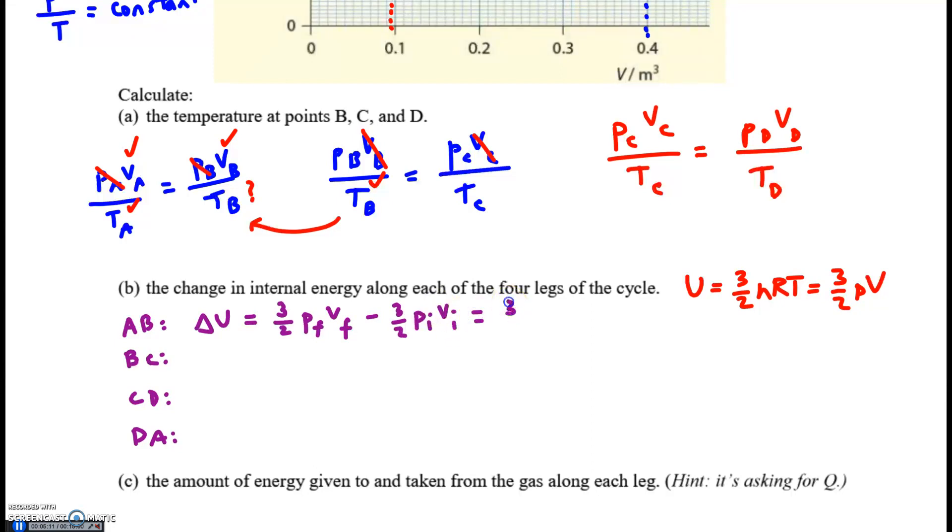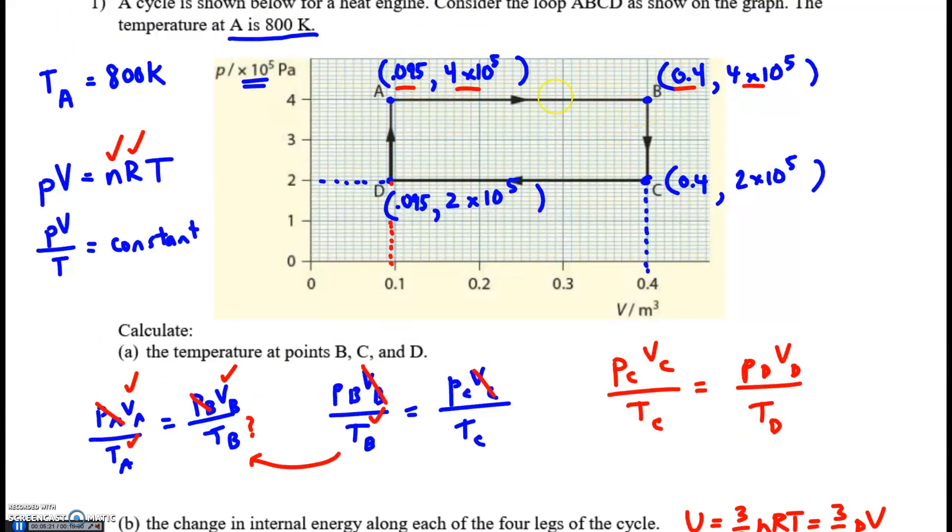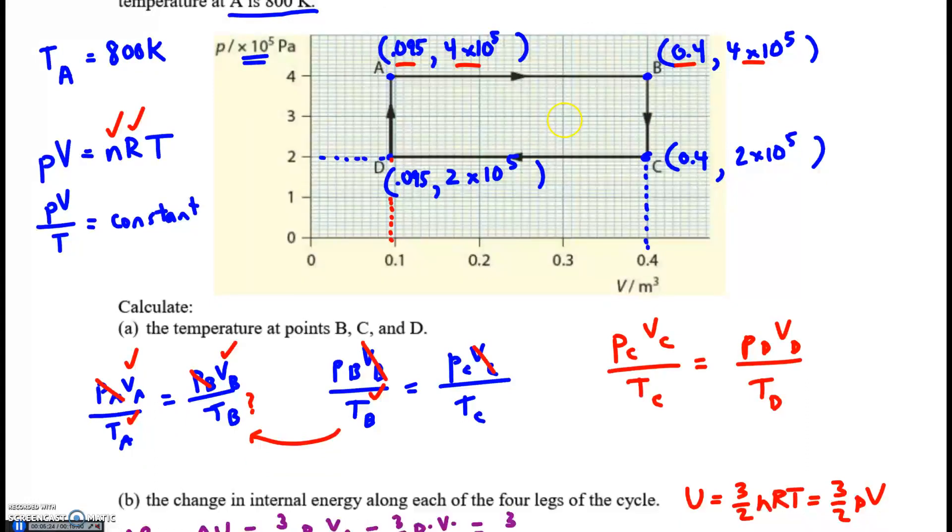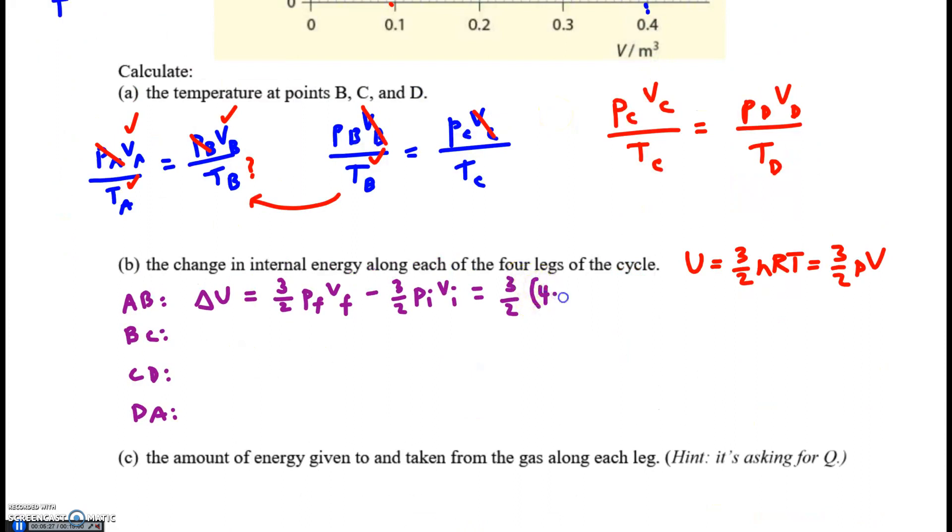So delta U is simply 3 halves times P_final V_final minus P_initial V_initial. You can factor out the 3 halves. You can plug in the values for B and A. The final is B, the initial is A. We're going from A to B, but they have the same pressure. So you could just factor out the pressure, the 4 times 10 to the 5th. For your final minus initial volume, we ended at 0.4 and started at 0.095. And you calculate.